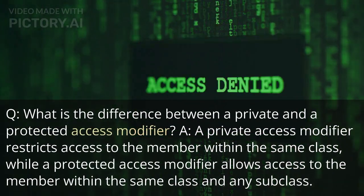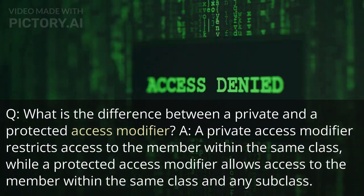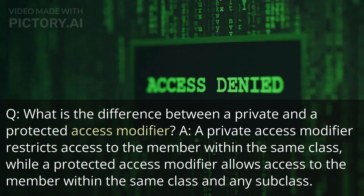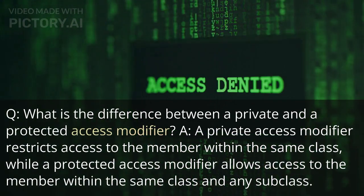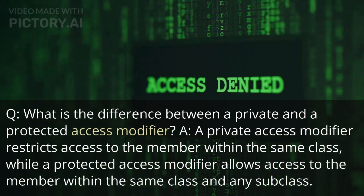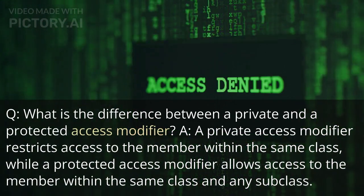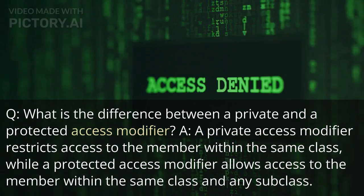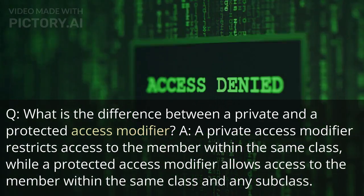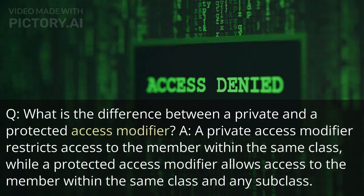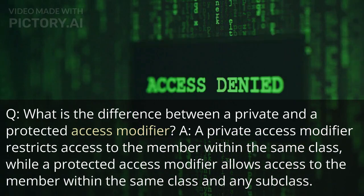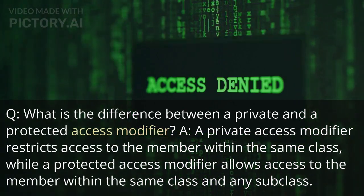What is the difference between a private and a protected access modifier? A private access modifier restricts access to the member within the same class, while a protected access modifier allows access to the member within the same class and in any subclass.